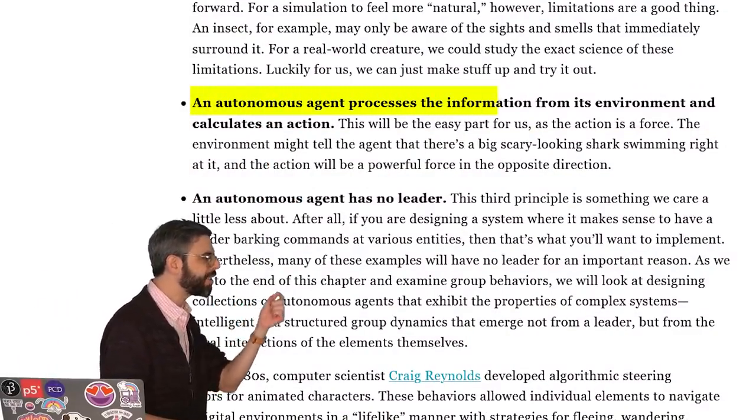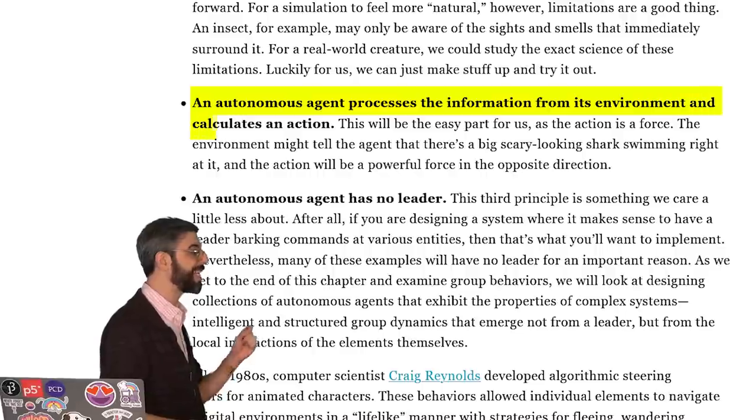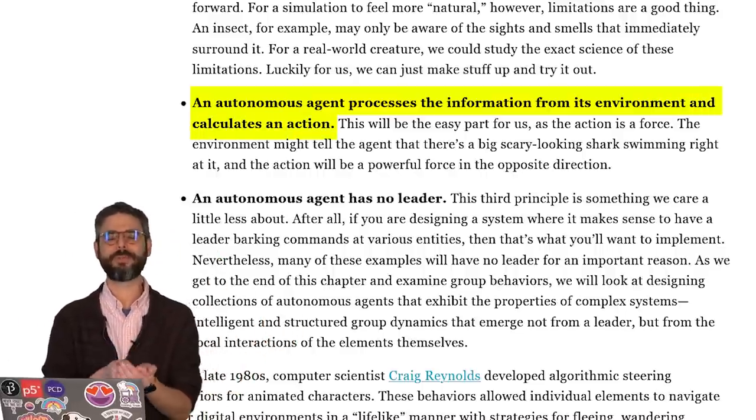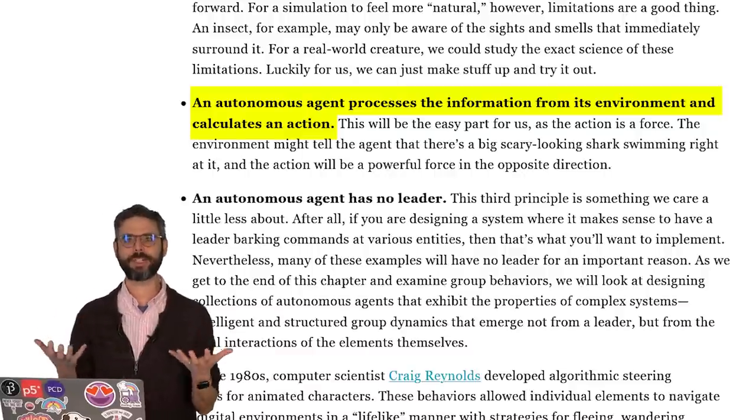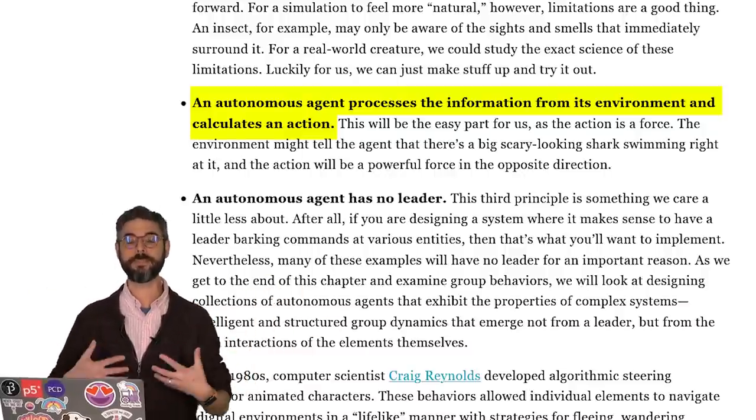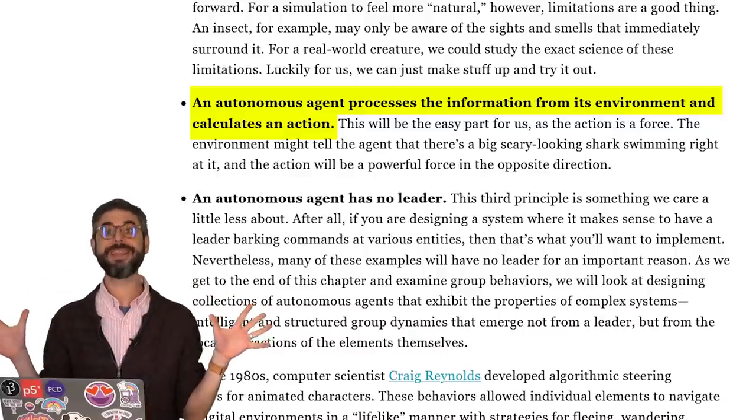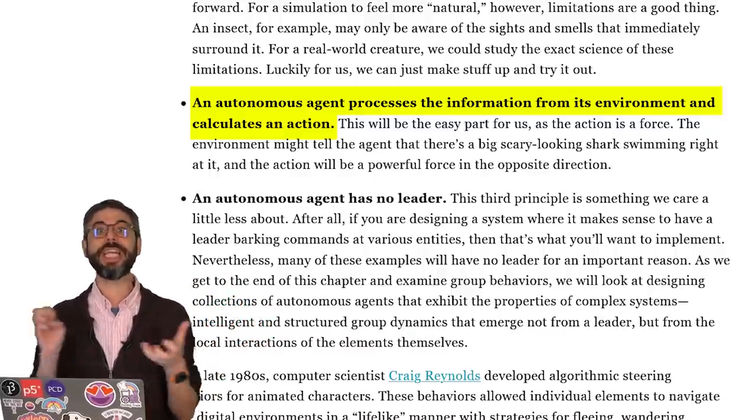An autonomous agent processes the information from its environment and calculates an action. Again, this is the critical conceptual leap forward. Instead of being an inanimate object that's just responding to forces in the system, the object itself, the agent, is perceiving and then translating its perception into a force, into an action that it's going to take.